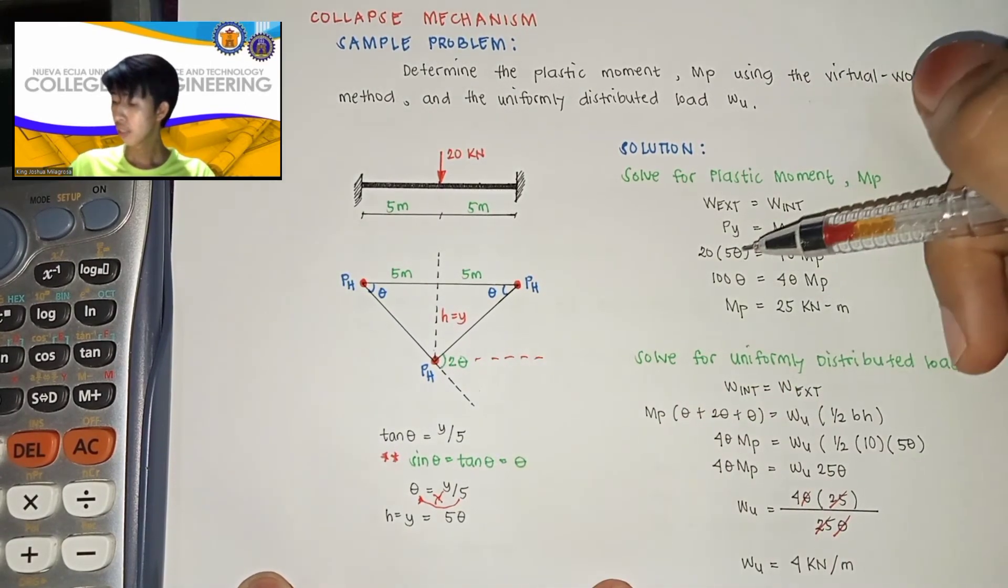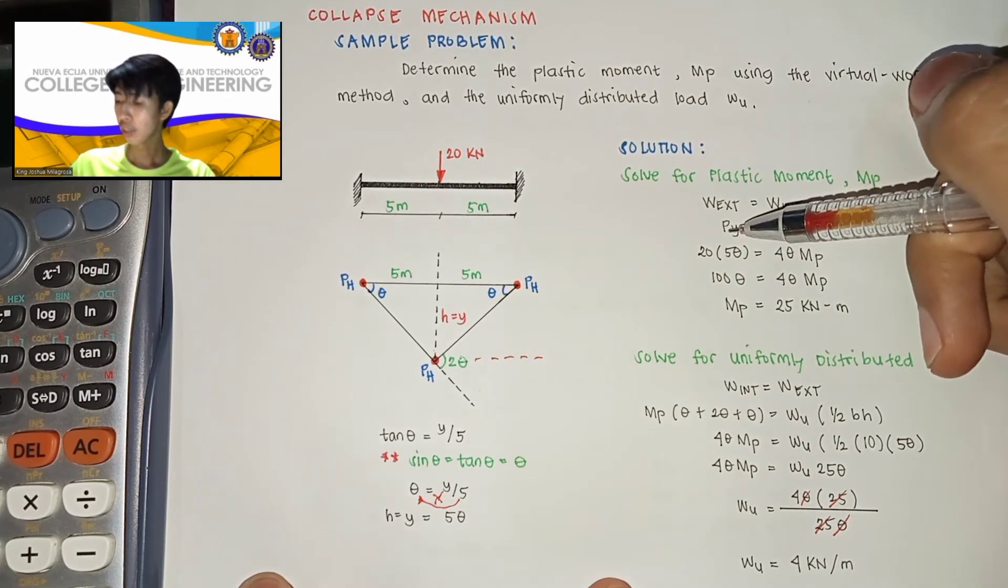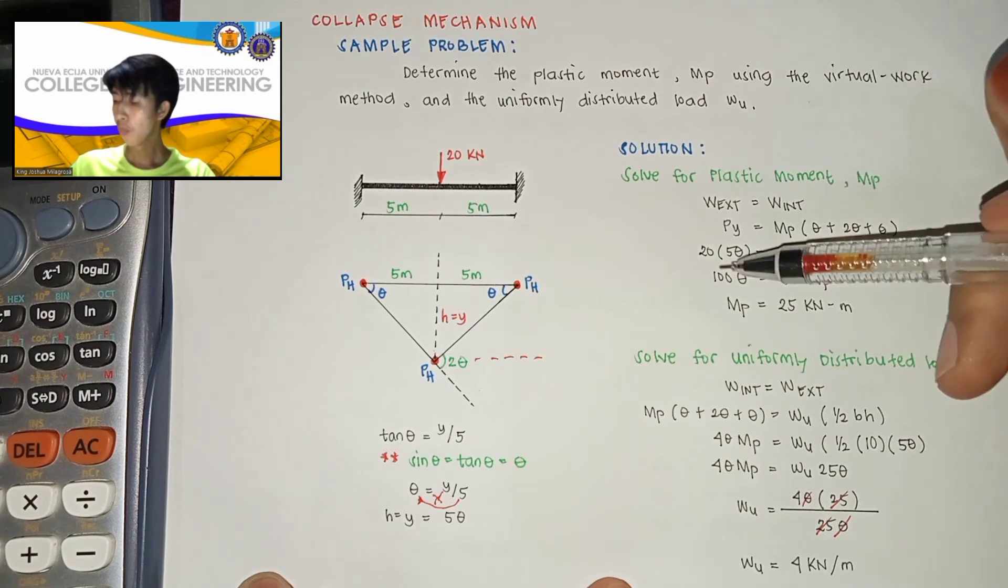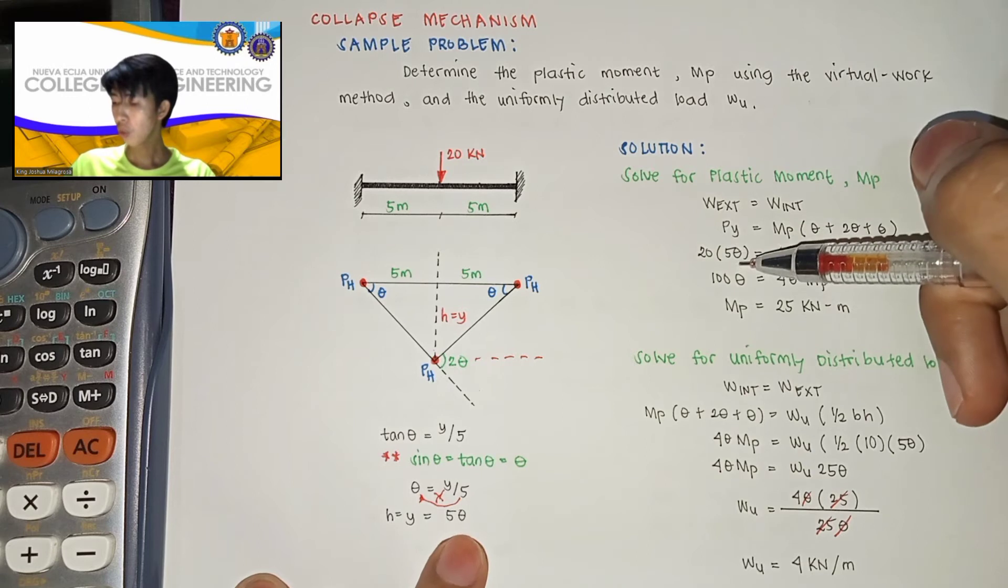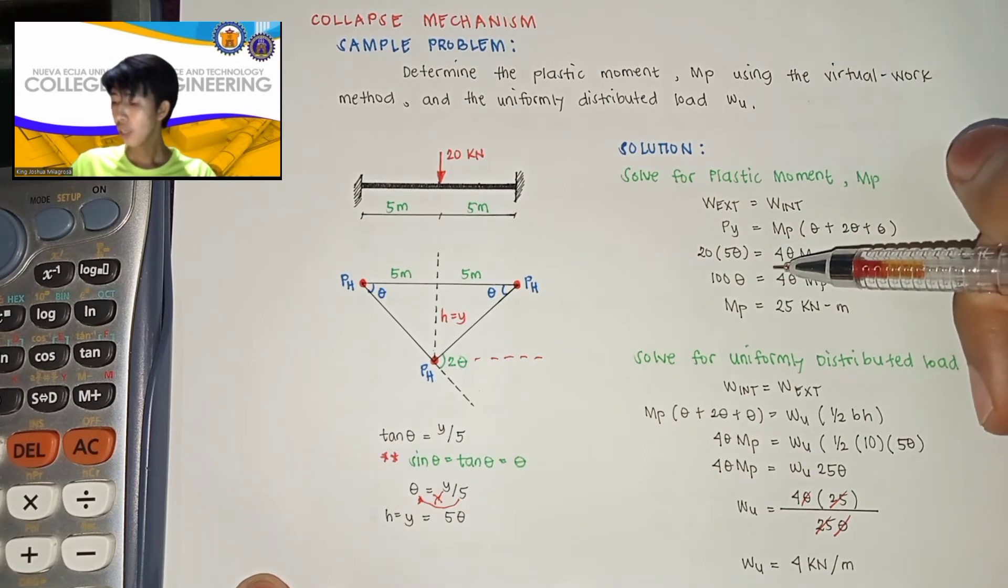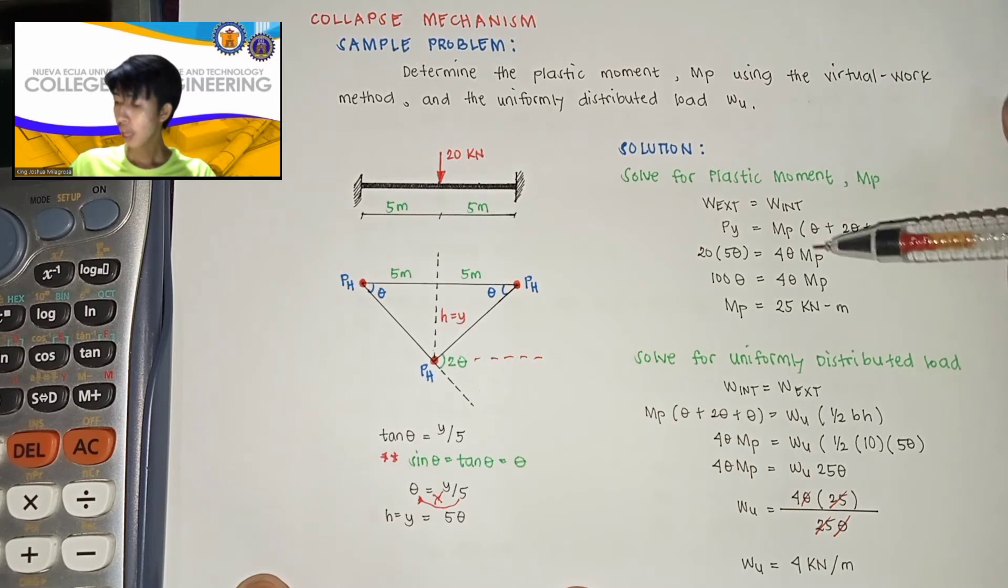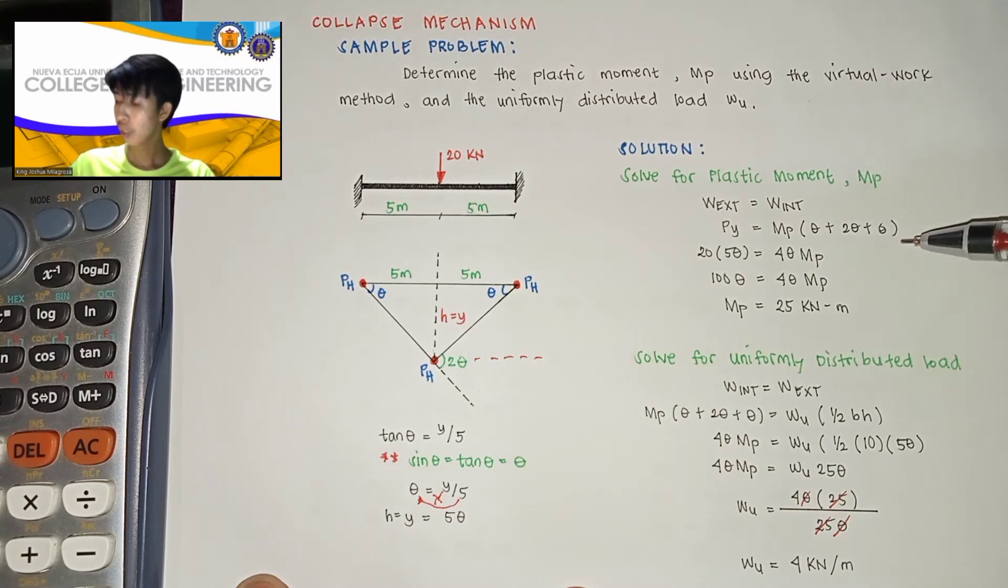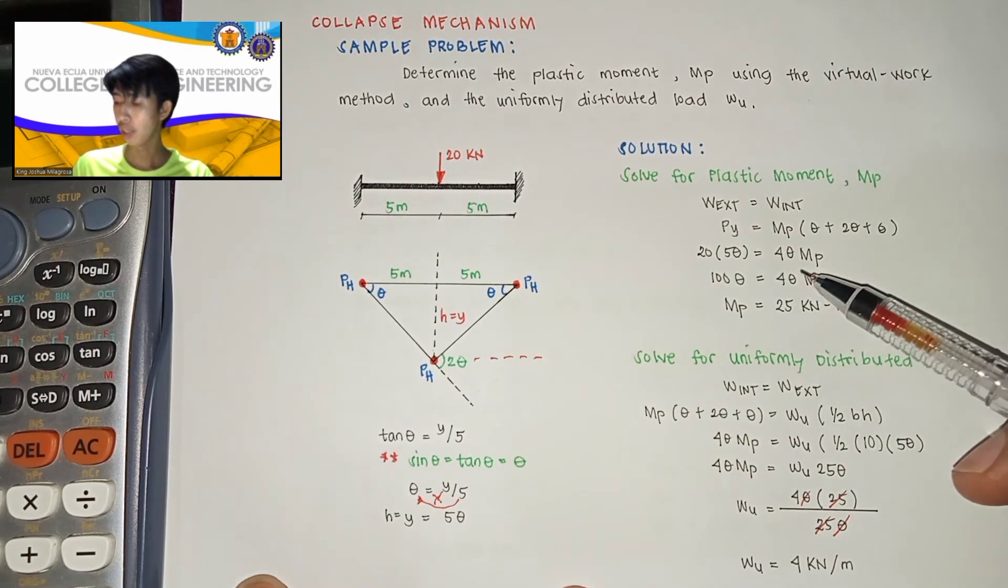By substitution, yung p natin or yung load natin is 20 kN, multiply lang natin sa y or yung height, which is equal to 5 theta, is equal yan sa MP times 4 theta. So theta plus theta plus 2 theta is equal to 4 theta MP.